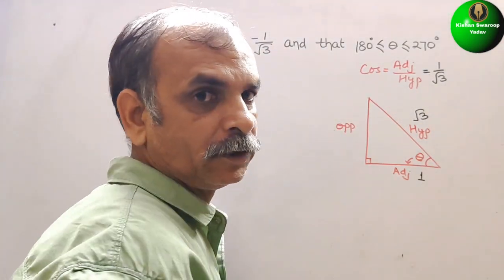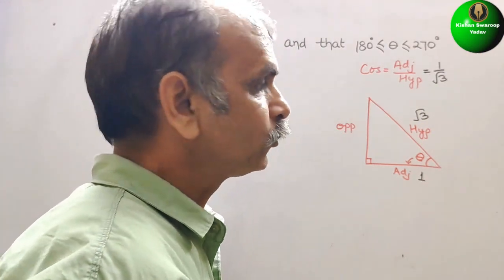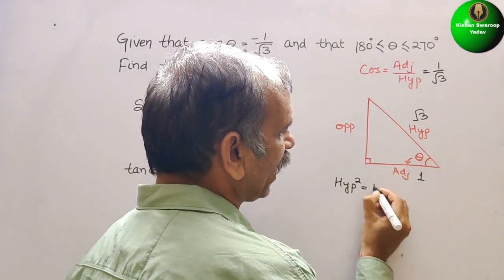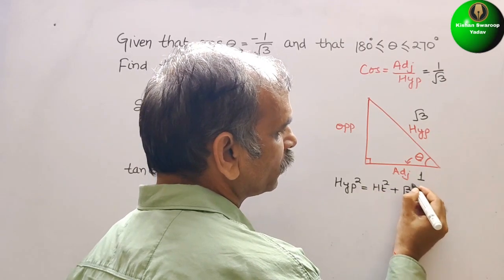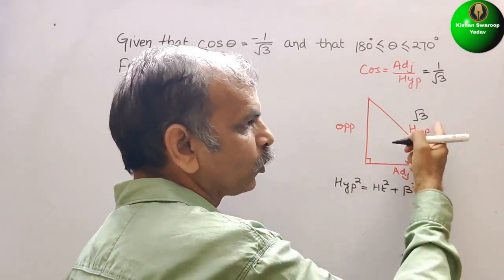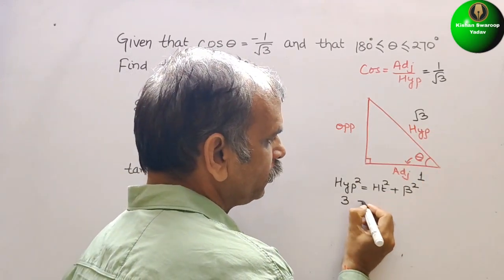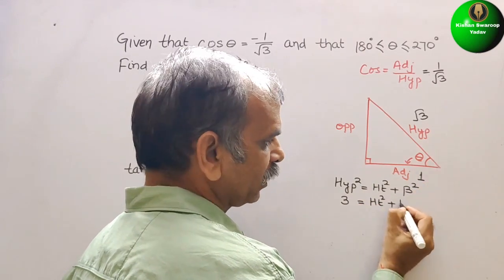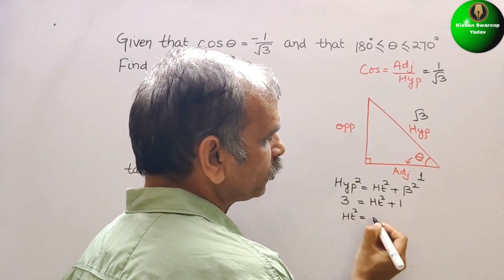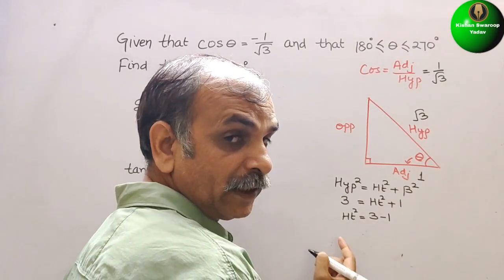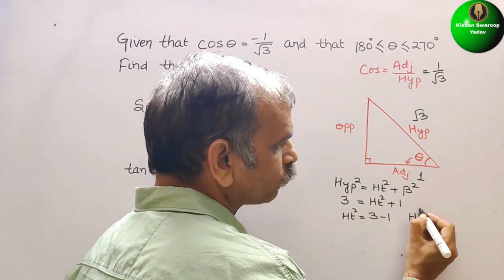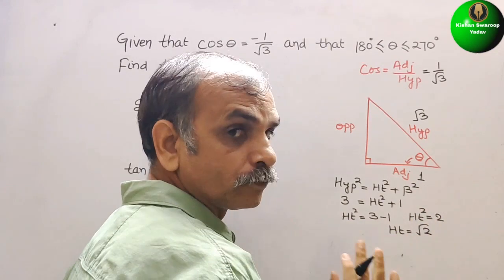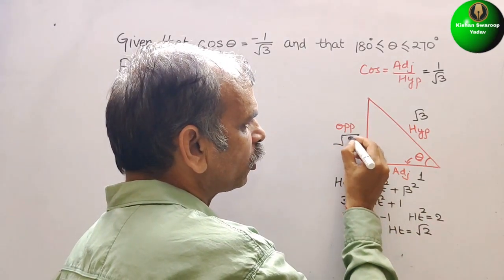Now we will find out the opposite side by Pythagoras theorem. We know that hypotenuse squared is equal to height squared plus base squared. Substituting the values: root 3 squared is 3, equal to height squared plus 1 squared is 1. So height squared is 3 minus 1, that is 2. Therefore height is equal to root 2. So this opposite side is root 2.